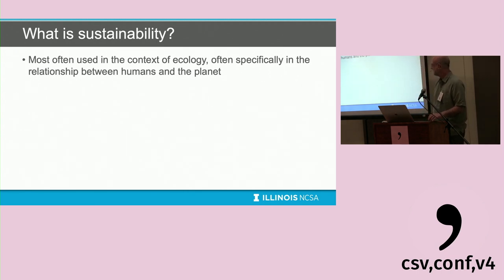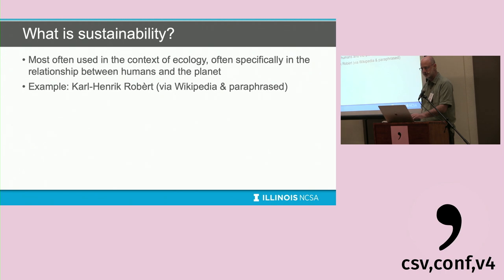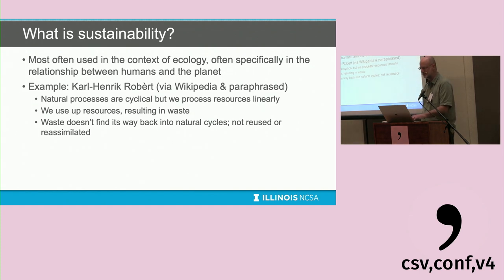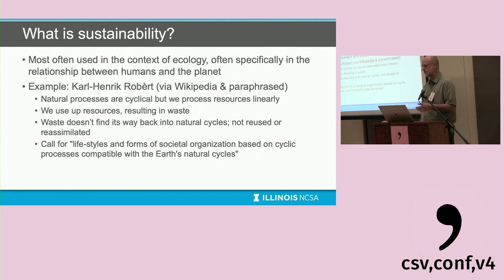More seriously, sustainability in the general sense is often used in the context of ecology. Carl Henrik Robert says that natural processes are cyclic, but humans process resources linearly — we use up resources resulting in waste that doesn't find its way back into natural cycles. He called for life cycles and forms of societal organization based on cyclic processes compatible with the earth's natural cycles. In general media, though, 'sustainability' could mean almost anything.